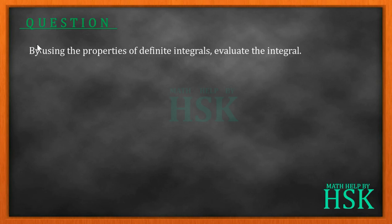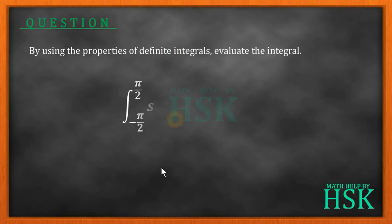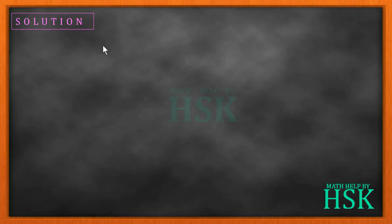Hello friends, the question is: by using the properties of definite integrals, evaluate the integral of sine squared x dx from the limit minus pi by 2 to pi by 2. So let us see how we are going to solve this question. We have been given sine squared x dx from minus pi by 2 to pi by 2.